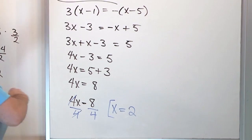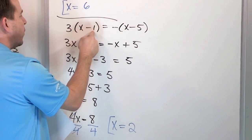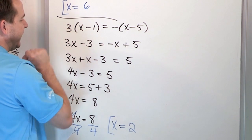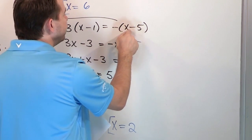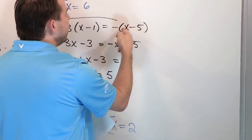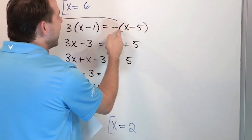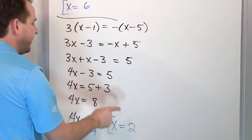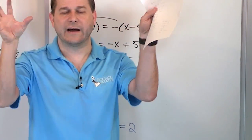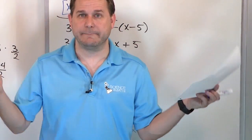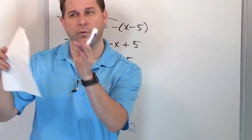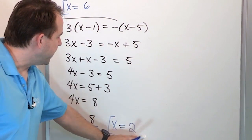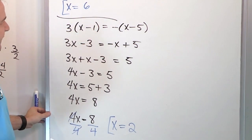To verify, substitute x equals 2 back in: 2 minus 1 is 1, times 3 is 3 on the left. On the right, 2 minus 5 is negative 3, times the negative sign out front makes it positive 3. Both sides equal 3, confirming x equals 2 is correct.